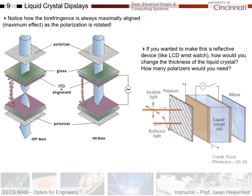This diagram confirms that with no voltage the birefringence is maximally aligned as the polarization rotates with the liquid crystal, producing the 180-degree phase shift needed to pass through the second polarizer. Applying the electric field aligns all the molecules so neither polarization direction sees any birefringence, resulting in no transmission — a dark or black state, sometimes called the 'on' state due to the applied voltage.